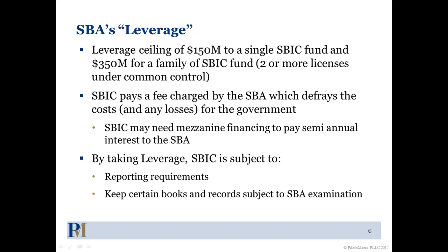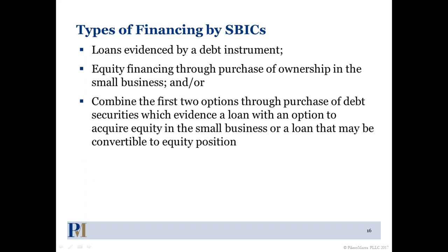Now turning to how the SBIC makes investments — getting the money out to small businesses. An SBIC can invest in small businesses through loans evidenced by a debt instrument, or through equity financing where they receive part ownership in the small business. This is really what got John and Kimi very interested in the topic, because often private equity tries to come in and invest in a small business, but regulatory restrictions for those in SBA set-aside programs create ownership and control issues.